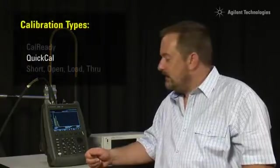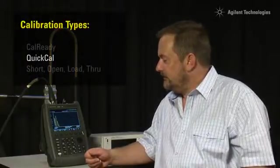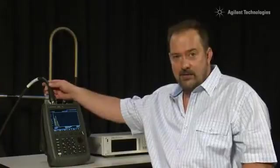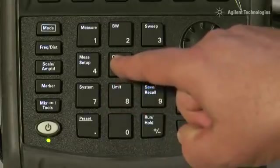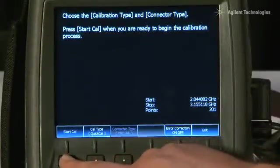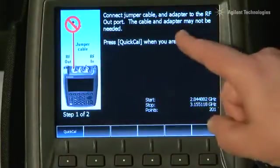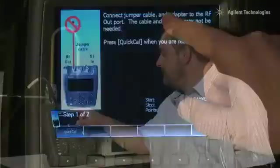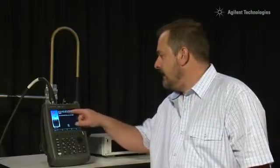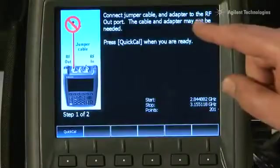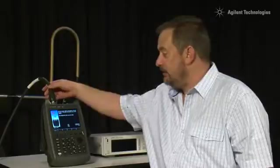That is where QuickCal comes into its element. I will disconnect the fly lead from the antenna, and I will press Cal. The CalType is already set to QuickCal, so I will press Start Cal, and we just follow the instructions. Connect your jumper cable, which we have got connected, and adapter to the RF out port. The cable and adapter may not be needed, but we want to calibrate out the effect of this cable. It says, Press QuickCal when you are ready.